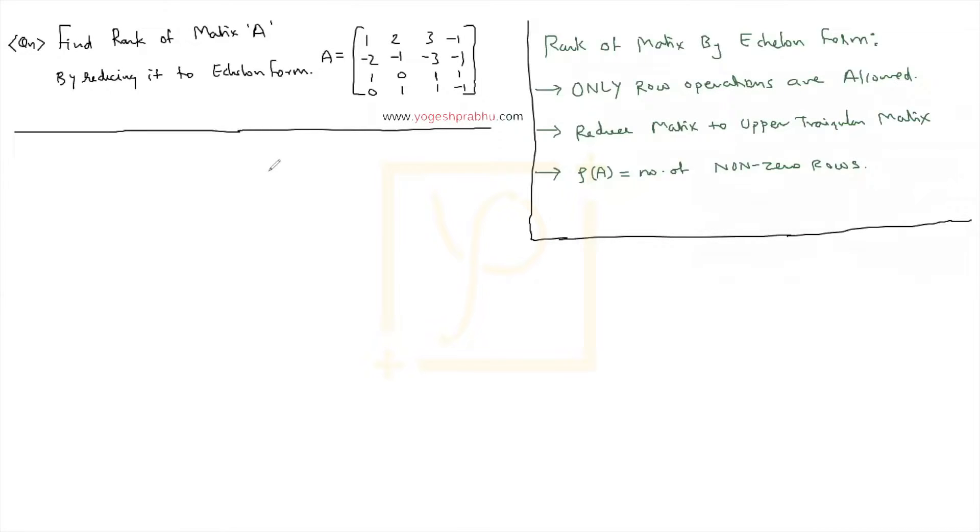Now we will discuss the next method of finding the rank of a matrix. Here we will find the rank by reducing it to an echelon form, echelon form or echelon form whichever way you want to pronounce it.